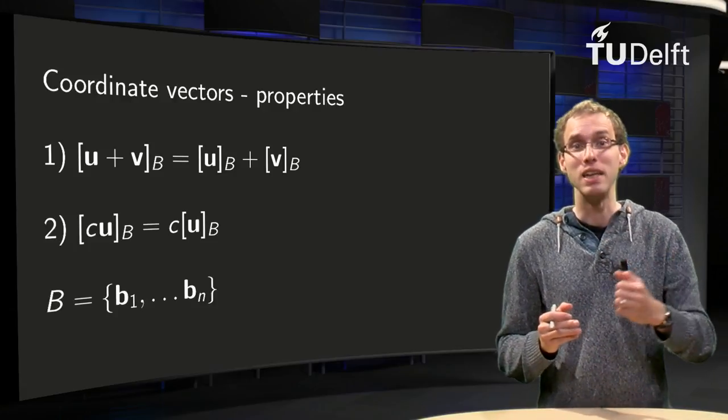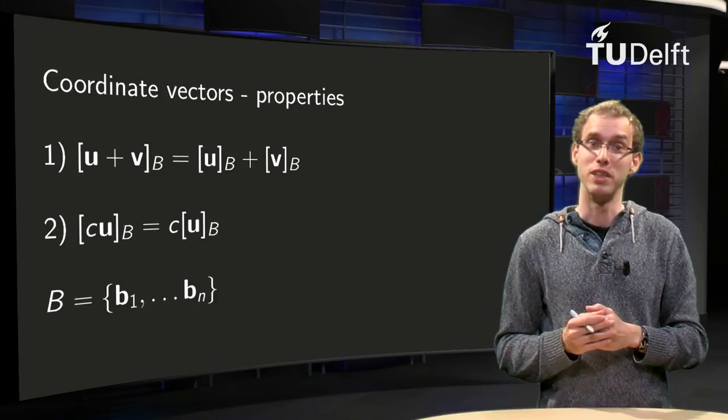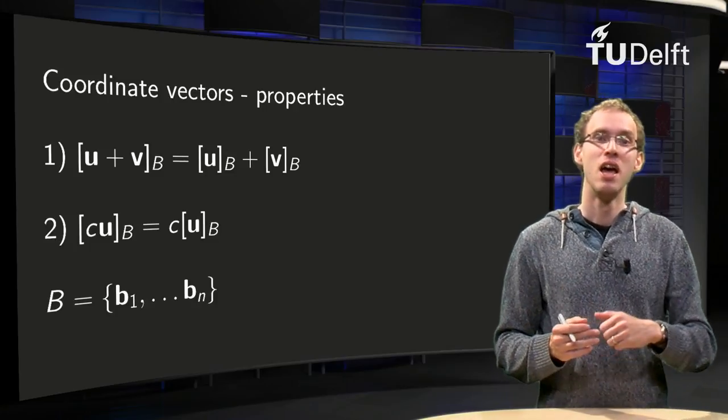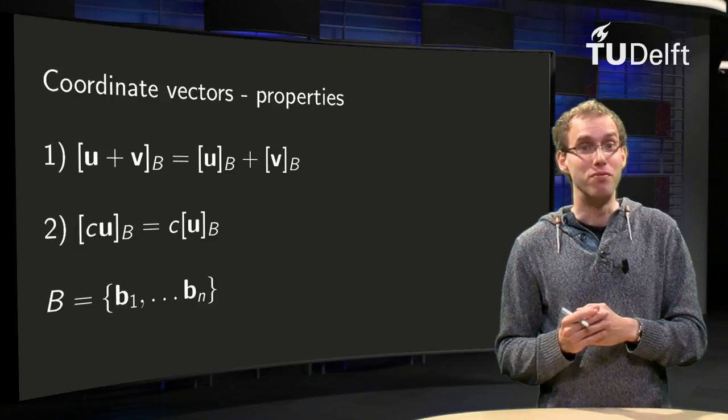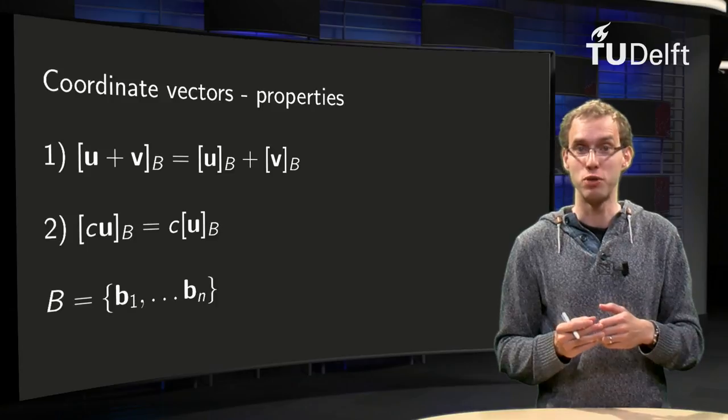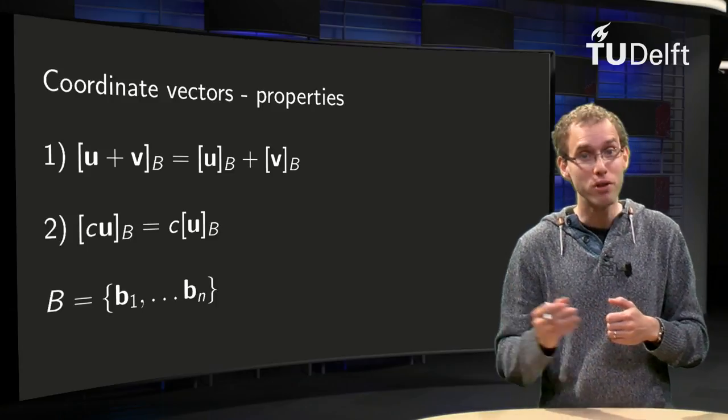If you want to establish linear independence in some general vector space, you can use coordinate vectors. If you want to know whether a vector is a linear combination of some other vectors in some general vector space, you can use coordinate vectors.